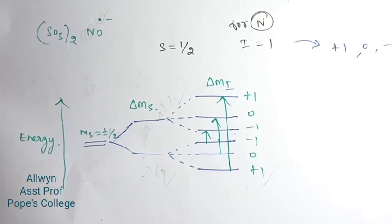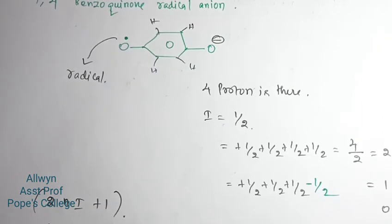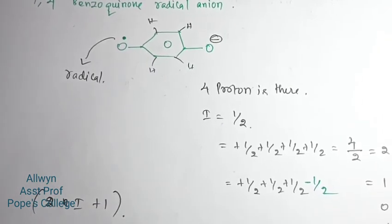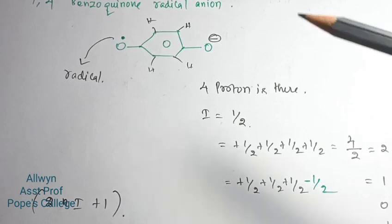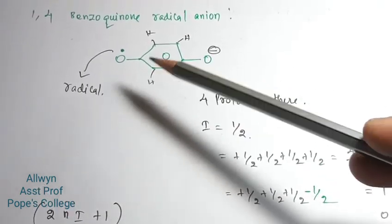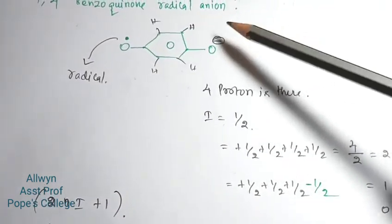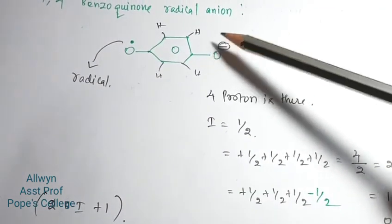Let's look at one more example: 1,4-benzo radical anion. This contains one radical, making it a radical anion.